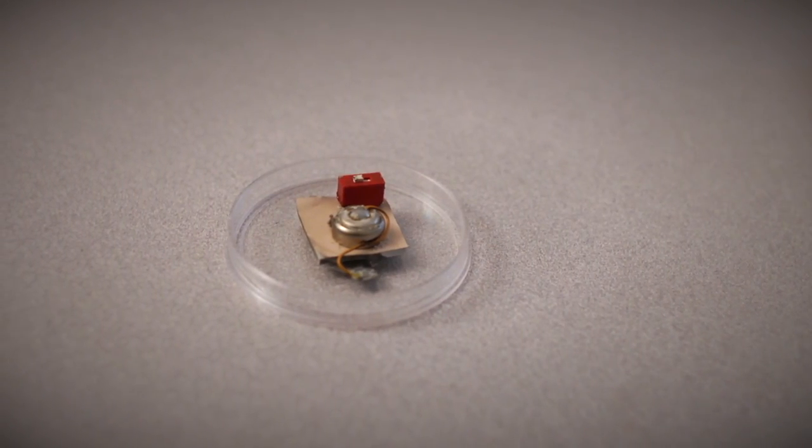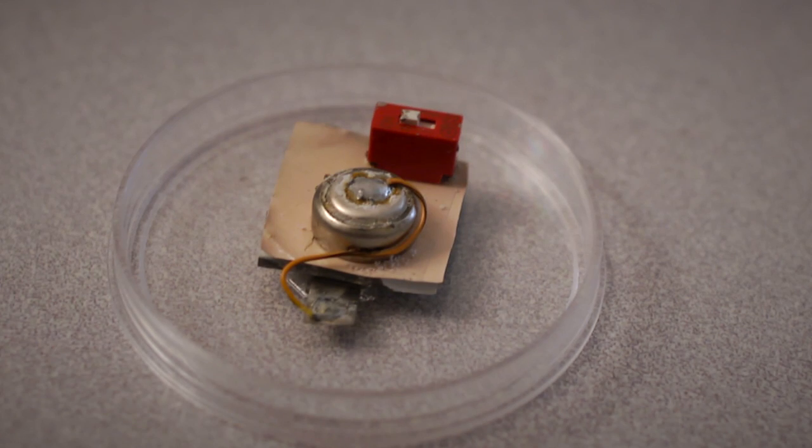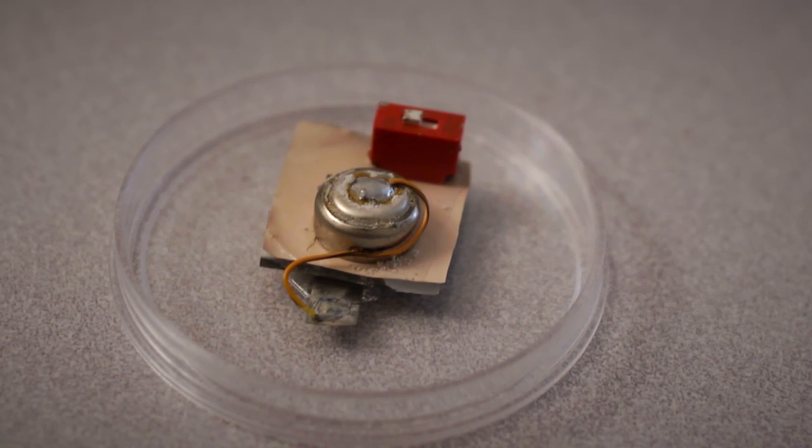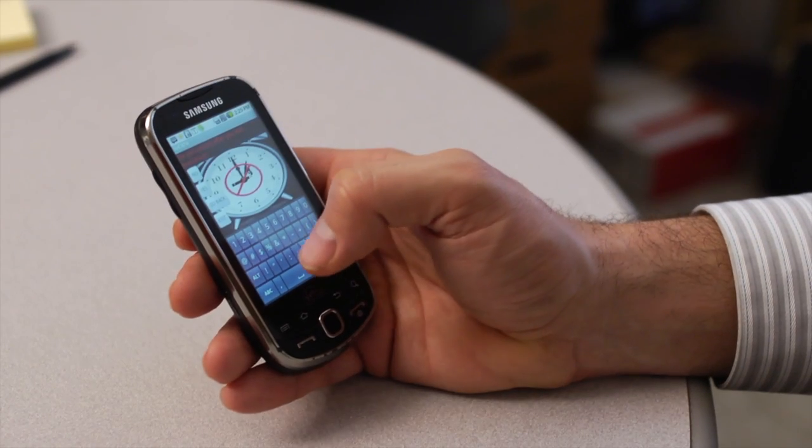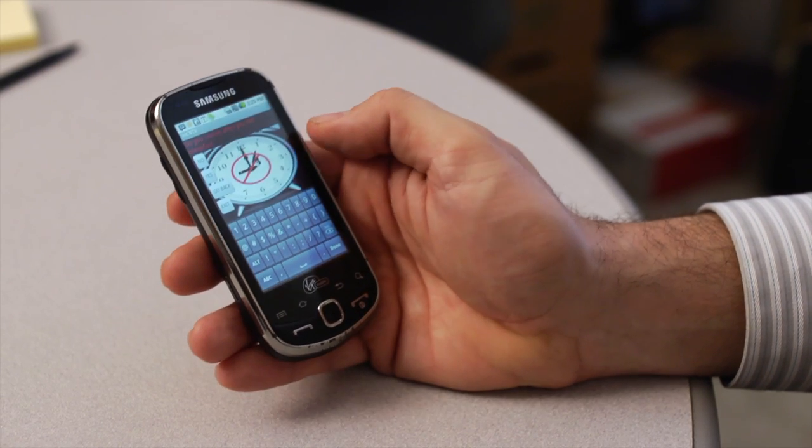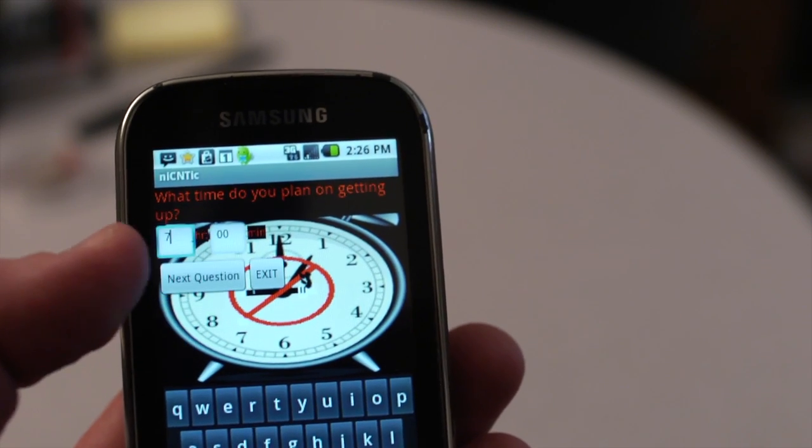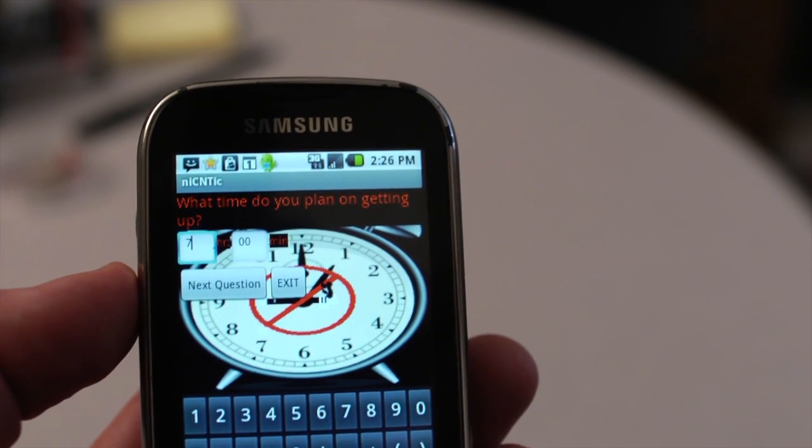You can have these little prototypes that can actually operate on a watch battery with a Bluetooth communication device. A smartphone with a program on it is where you fill out a survey, what time of day do you smoke basically, and we can turn on and off this device.